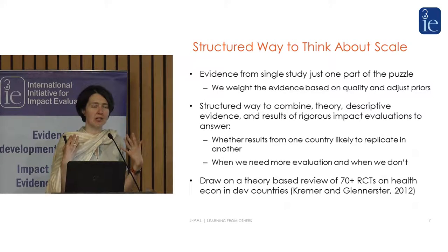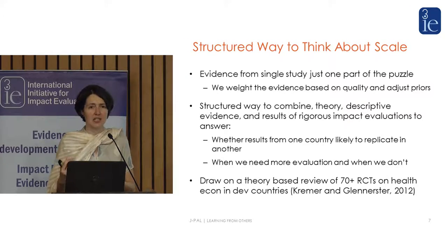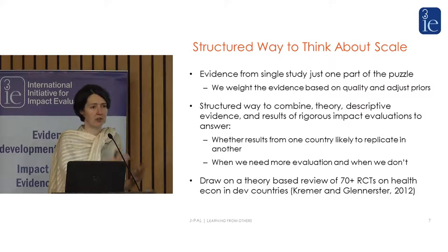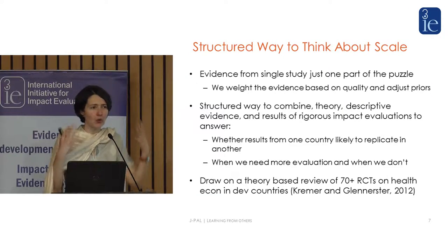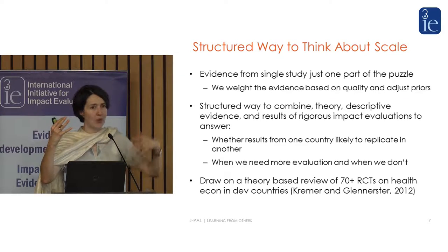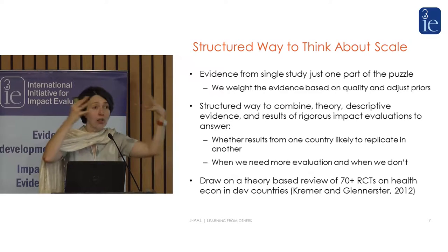Part of that framework is understanding that when we're looking at evidence, we should never look at any one study in isolation. A lot of the discussion around generalizability has made that mistake — asking does this study replicate to another context? When you're a policy maker, you never look at just one study. What you're trying to do is take all the evidence available, maybe weight some more than others, but see any study in the context of all the other information.